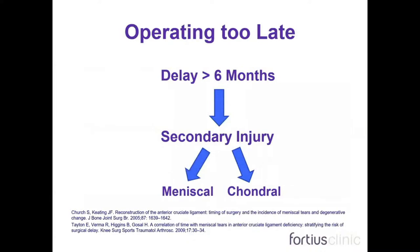One can also operate too late. The literature suggests the optimal window is to reconstruct and stabilize the knee within six months of the index injury. Any delay beyond this is associated with an increased prevalence of meniscal and chondral pathology. Of course, this is a challenge in the context of NHS waiting lists, but it is something we continue to struggle with.